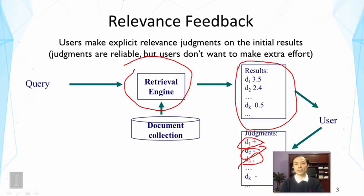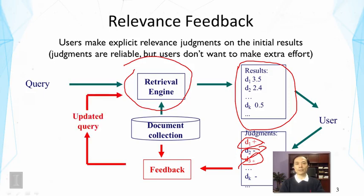We got some feedback information from the user based on their judgments. This can be very useful to the system to learn what exactly is interesting to the user. The feedback module takes this as input and uses the document collection to try to improve ranking, typically by updating the query so the system can rank results more accurately. The feedback is based on relevance judgments made by users. These judgments are reliable, but users generally don't want to make extra effort, so the downside is that it involves some extra effort by the user.